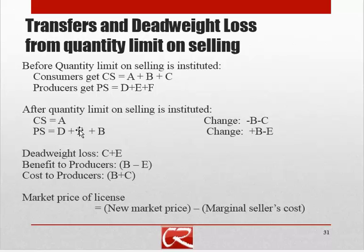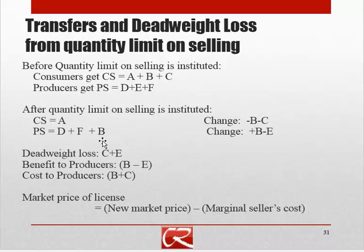We can think about the effects on consumer and producer surplus just like we did with price controls. If our old equilibrium price is here, originally consumer surplus is everything above the old equilibrium price and below the demand curve — so originally consumer surplus is A plus B plus C. Originally producer surplus is everything below that price and above the supply curve — so originally producer surplus is D plus E plus F.